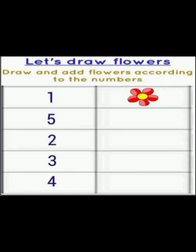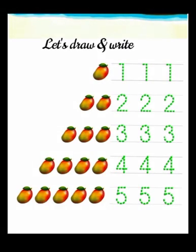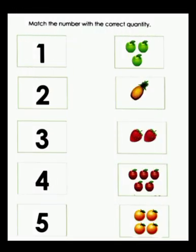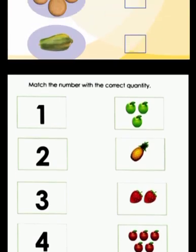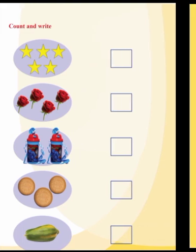Next, let's draw flowers. Draw and add flowers according to the numbers. Then let's draw and write mangoes like this. Here we see some pictures — let's draw and write how many there are of each. Then match the numbers with the correct quantity. Count and write in your textbook.